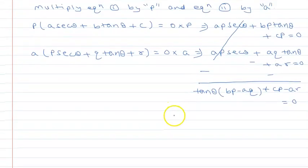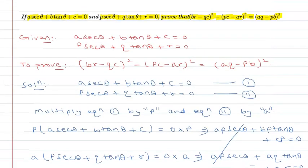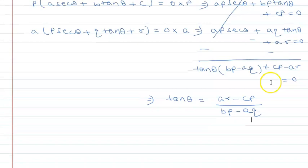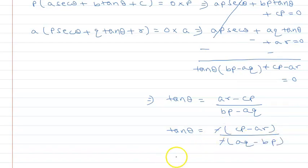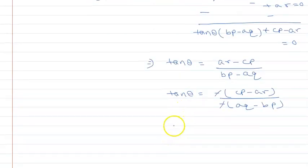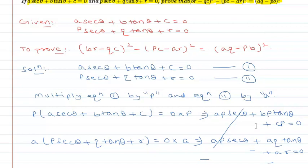Subtracting the two results: CP − AR = 0 terms remain. The tan θ value comes out as (cp − ar) / (aq − bp). Since we need pc − ar, taking the negative: tan θ = (cp − ar) / (aq − bp).